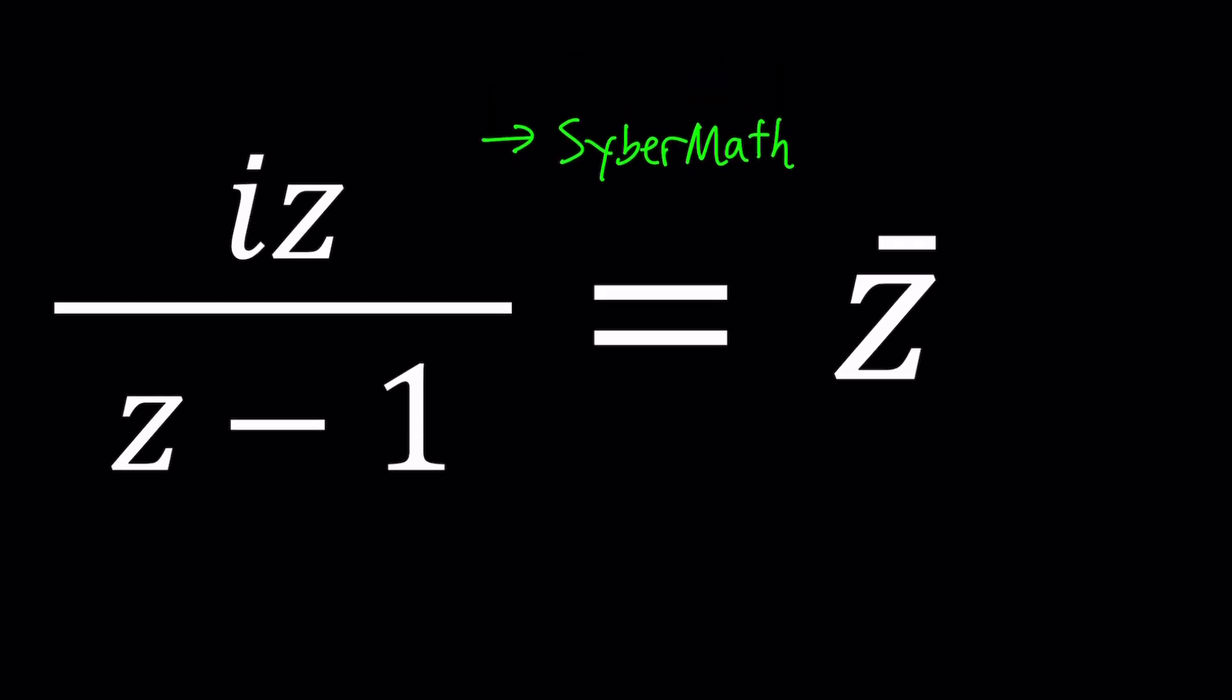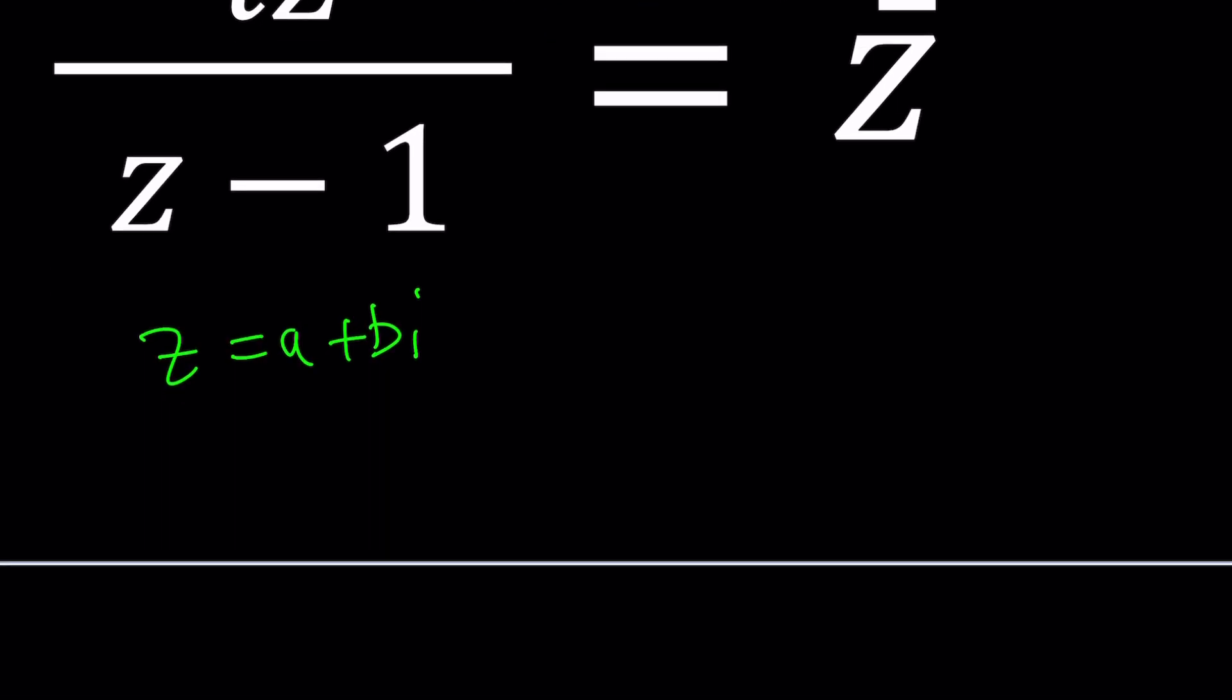Let's start with the more complicated one, replacing z with A plus BI. By the way you can combine these methods. For example you can cross multiply and then replace z with A plus BI. That's also quite possible. You want to do that? Let's do it. So let's go ahead and cross multiply.